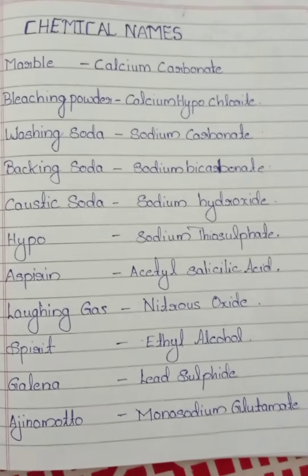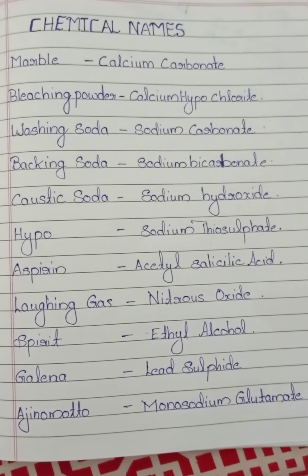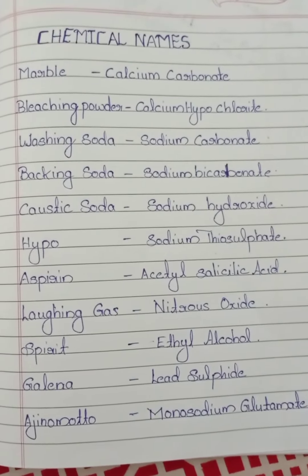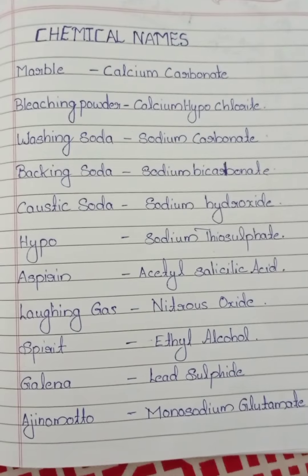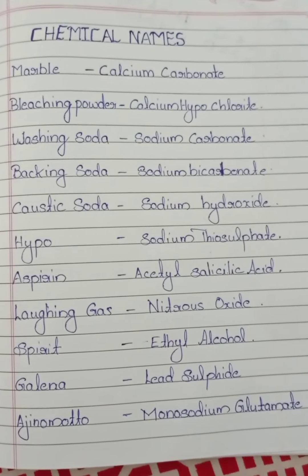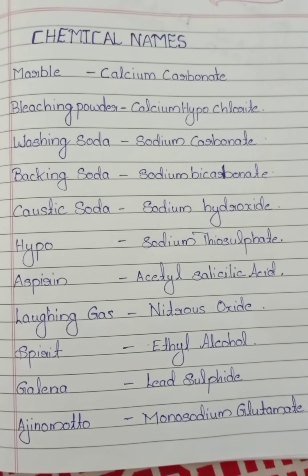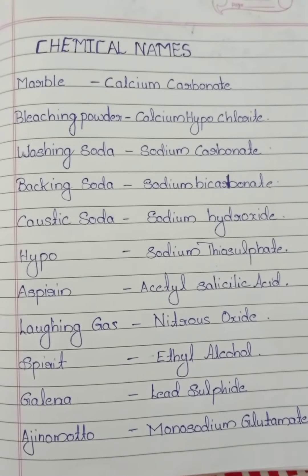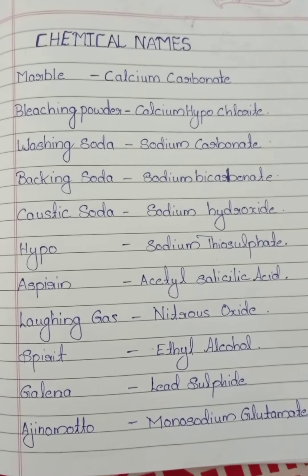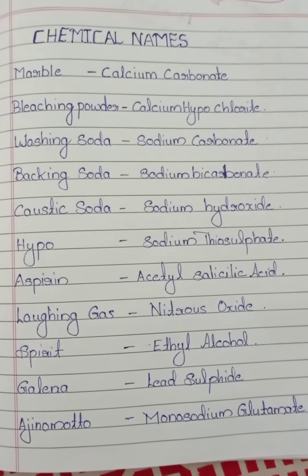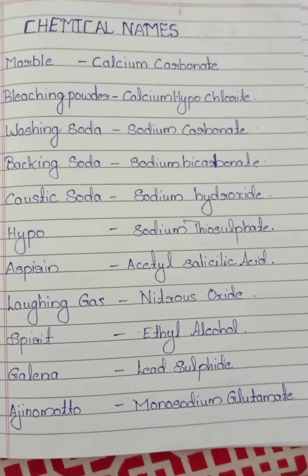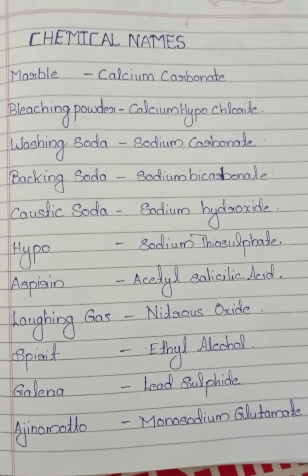We are going to learn chemical names. First, marble — chemical name is calcium carbonate. Bleaching powder — chemical name is calcium hypochlorite.